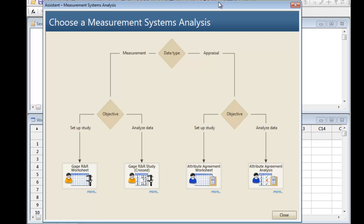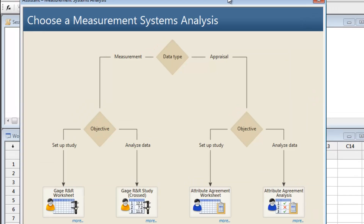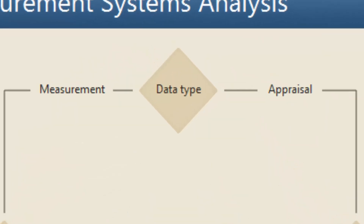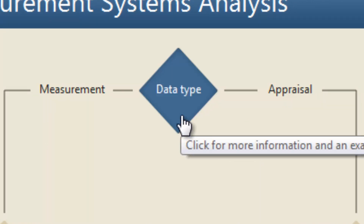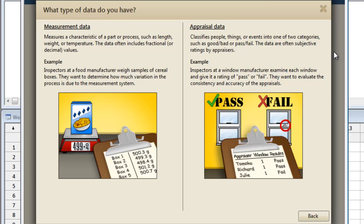First, we need to plan how to gather our data. An MSA could use either measurement or appraisal data. Clicking the Data diamond brings up examples that make it easy to confirm we need appraisal data.